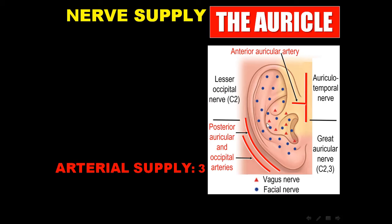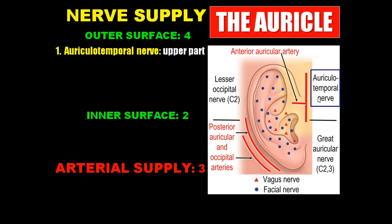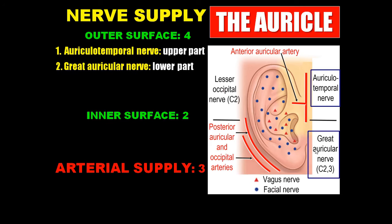Regarding the nerve supply of the auricle, I will talk about the outer surface and the inner surface. The outer surface is the lateral surface; the inner surface is the medial surface. The outer surface is supplied by four nerves. The upper part, above the tragus, is supplied by the auriculo-temporal nerve, a branch from the mandibular nerve. The lower part, below the tragus, is supplied by the great auricular nerve, which arises from C2 and C3. The concha is supplied by the auricular branch of the vagus. That's why slapping the auricle might lead to cardiac arrest due to stimulation of the vagus nerve.